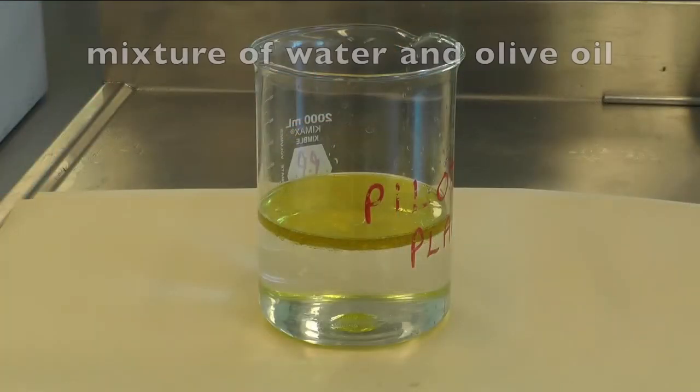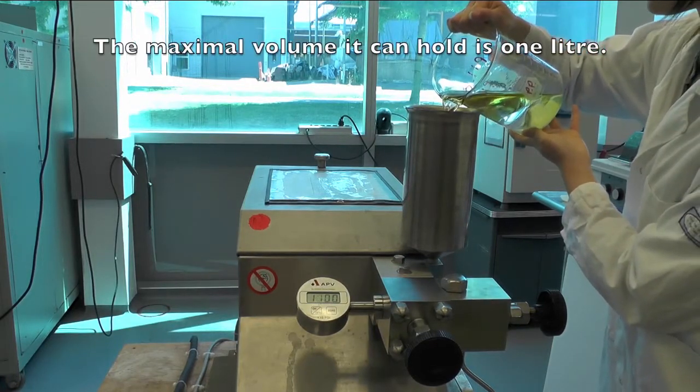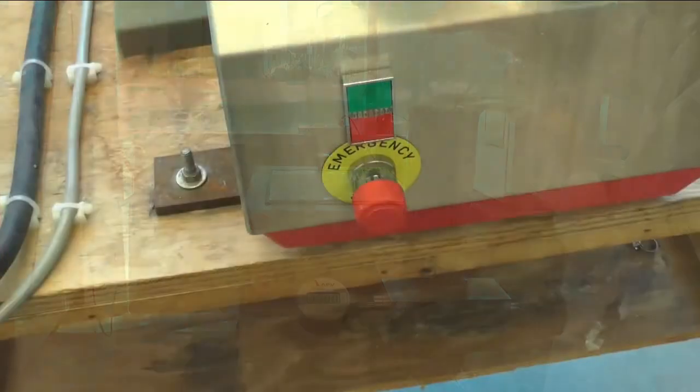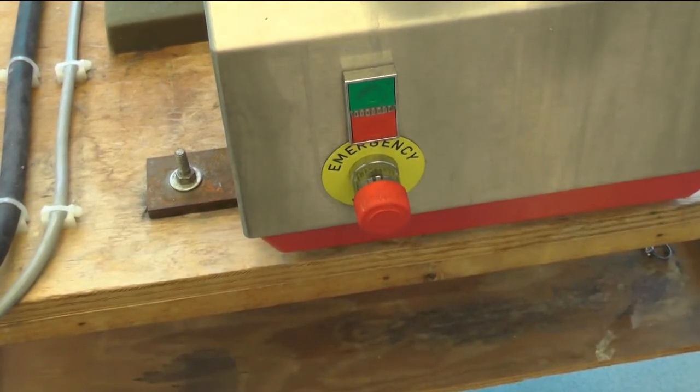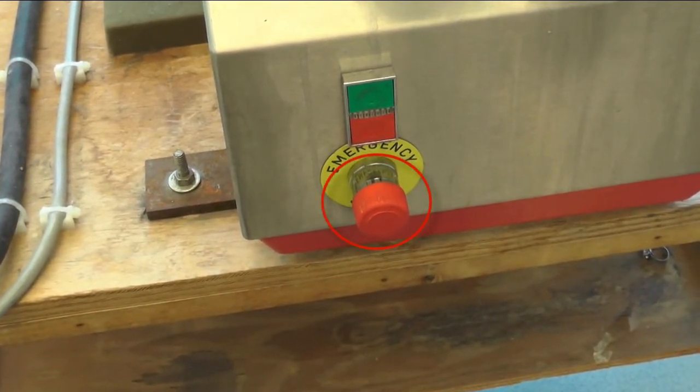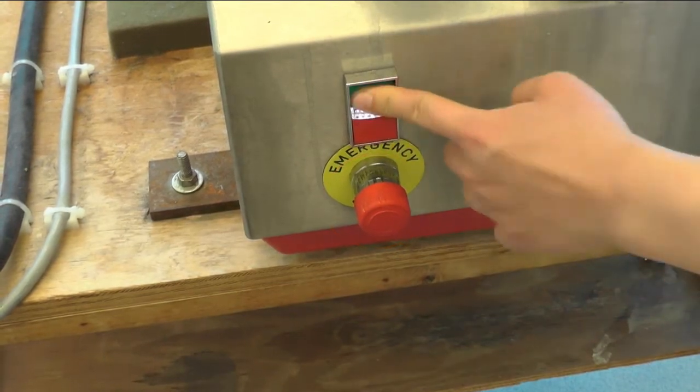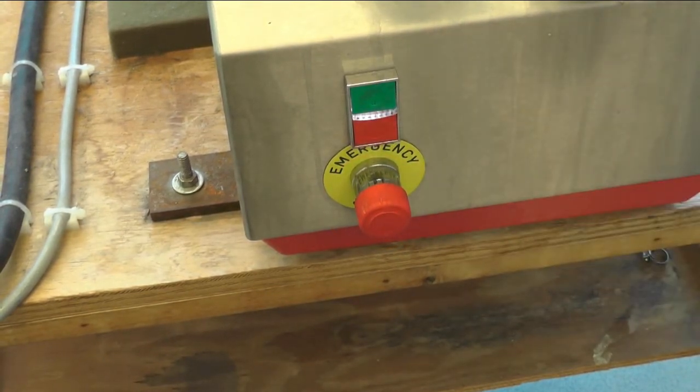Pour your sample into the feed hopper. To start homogenization, first make sure the emergency stop button is pulled out. Then press the green power button on the front of the machine.